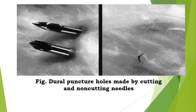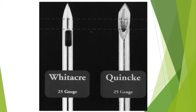The blunt tip needles are similar to pencil point tips. They produce an irregular tear on the dura, and the aperture is on the side of the shaft. They require more force to insert, are less likely to cause PDPH, and they produce less amount of tissue coring.